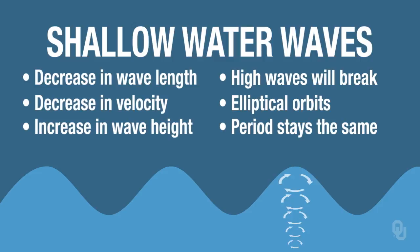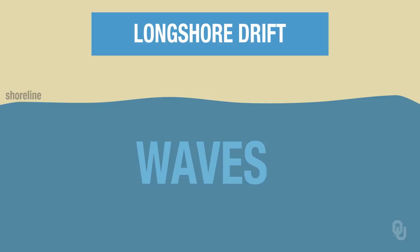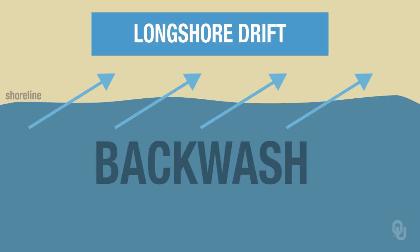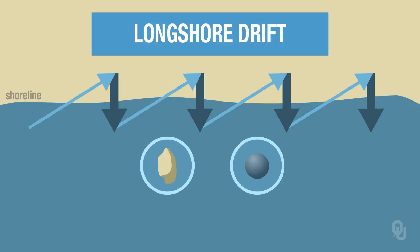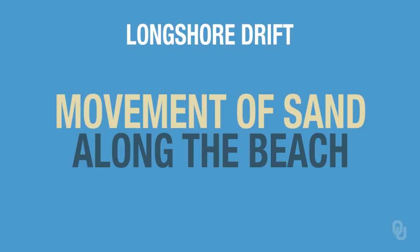Longshore drift comes about after the waves break. Assume that the waves are coming into a beach at an angle, as this diagram shows. The waves come in, they break, and they move up the beach. But then the water wants to go back — that's called the backwash. It's not going to follow the same path it came in on. It's going to follow the steepest and shortest path, straight down the beach. So a grain of sand comes in at an angle, moves back straight down, then is picked up by the next wave — this produces the longshore drift, or the movement of sand along the beach. It's a very important process common on almost all beaches.